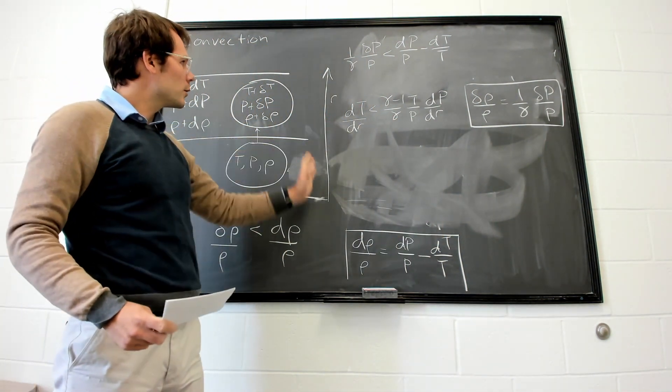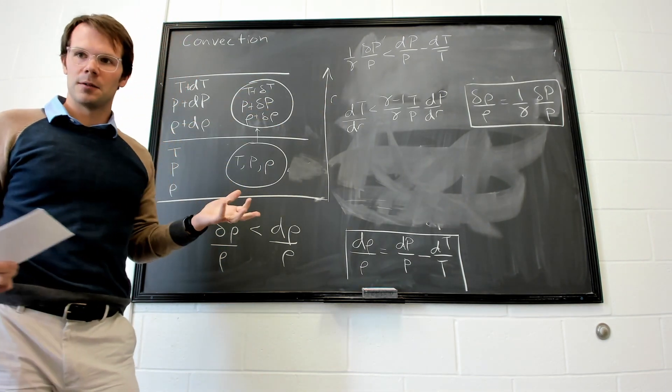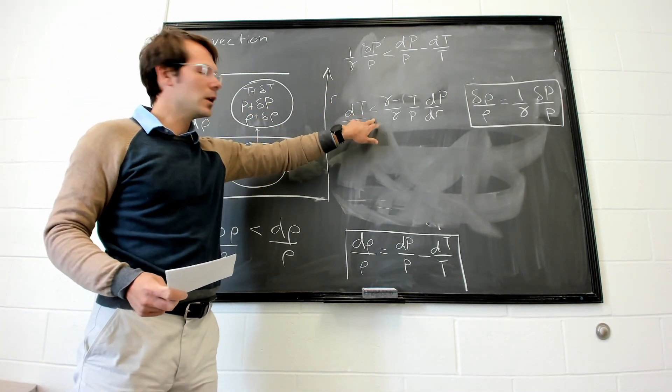So remember, we said as we're going up in the atmosphere, dT/dr is actually negative. So this is a little bit hard on the mind to use negative quantities in this way.